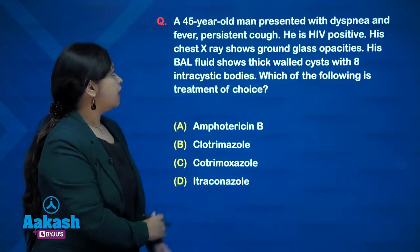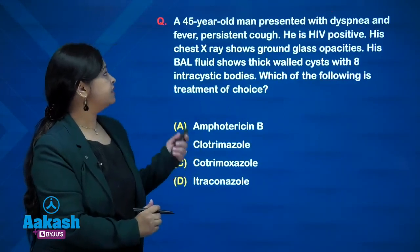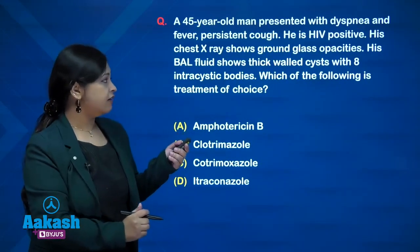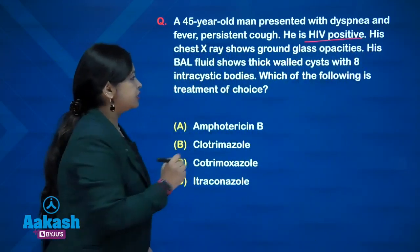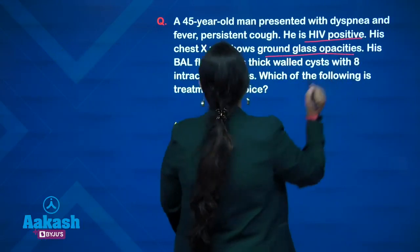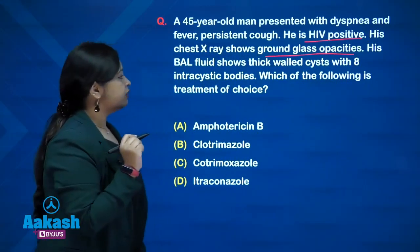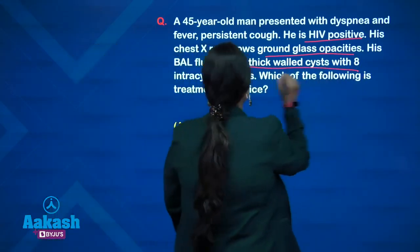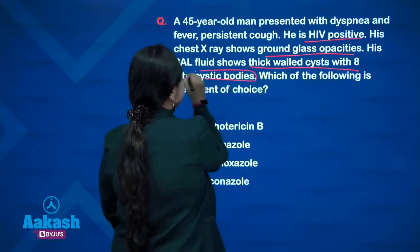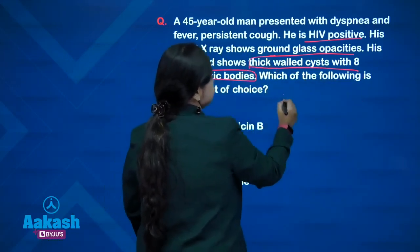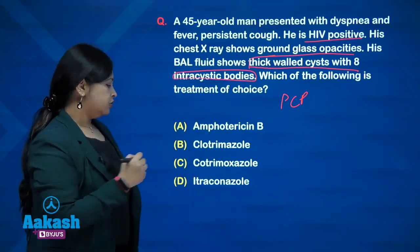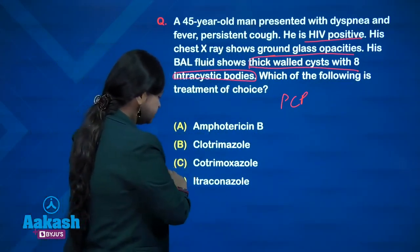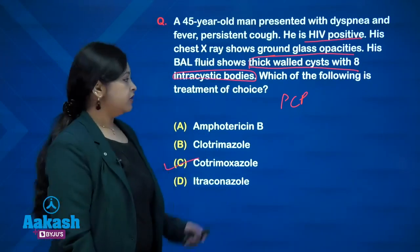Let us answer this question. A 45-year-old HIV-positive man presents with dyspnea, fever and persistent cough. Chest X-ray shows ground glass opacities and BAL fluid shows thick-walled cysts with eight intracystic bodies. The patient is suffering from PCP. The treatment of choice is cotrimoxazole.